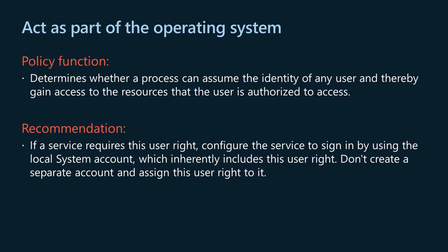The act as part of the operating system policy setting determines whether a process can assume the identity of any user and thereby gain access to the resources that the user is authorized to access. Typically, only low-level authentication services require this user right. The calling process may request arbitrary extra privileges be added to the access token and may build an access token that doesn't provide a primary identity for auditing in the system event logs. If a service requires this user right, configure the service to sign in by using the local system account, which inherently includes this user right. Do not create a separate user account and assign this user right to it; instead use the local system account.